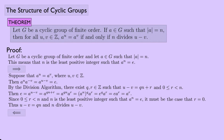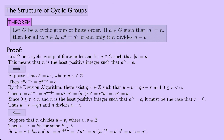Backwards direction: suppose n divides U − V. Then U − V = K·n for some integer K, so U = V + Kn. Then A^U = A^(V+Kn) = A^V · (A^n)^K = A^V · identity = A^V.